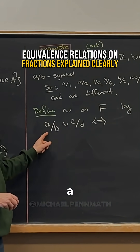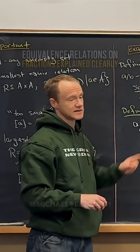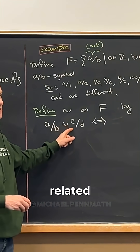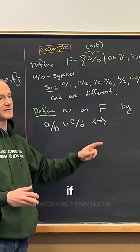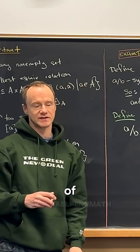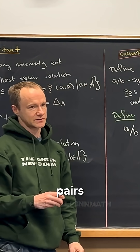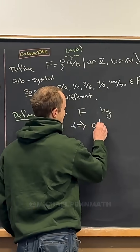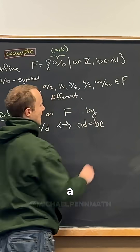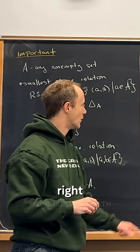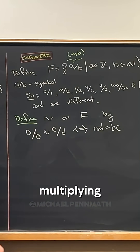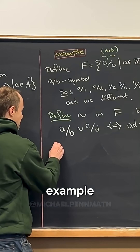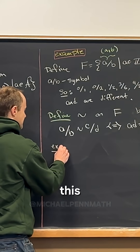Think about these as ordered pairs: a comma b, c comma d. So a comma b is related to c comma d if and only if ad equals bc — that's cross-multiplying.